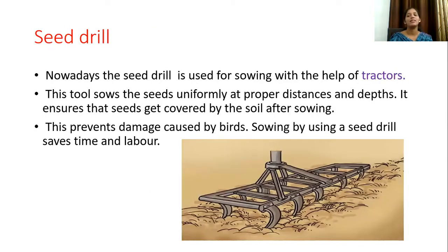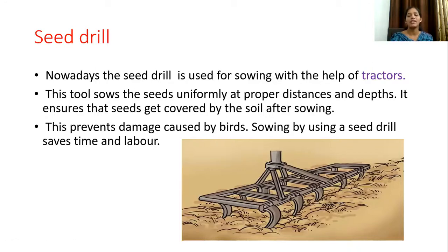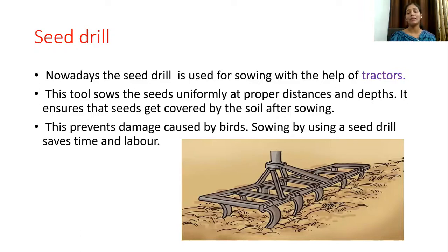Nowadays the same method is done for sowing using a tractor. In the tractor, the tool sows the seed uniformly at a proper distance and proper depth. The tractor has pipes attached with a blade sewn in, and by doing it this method, seeds are sowed at a proper distance. This prevents the damage caused by birds.